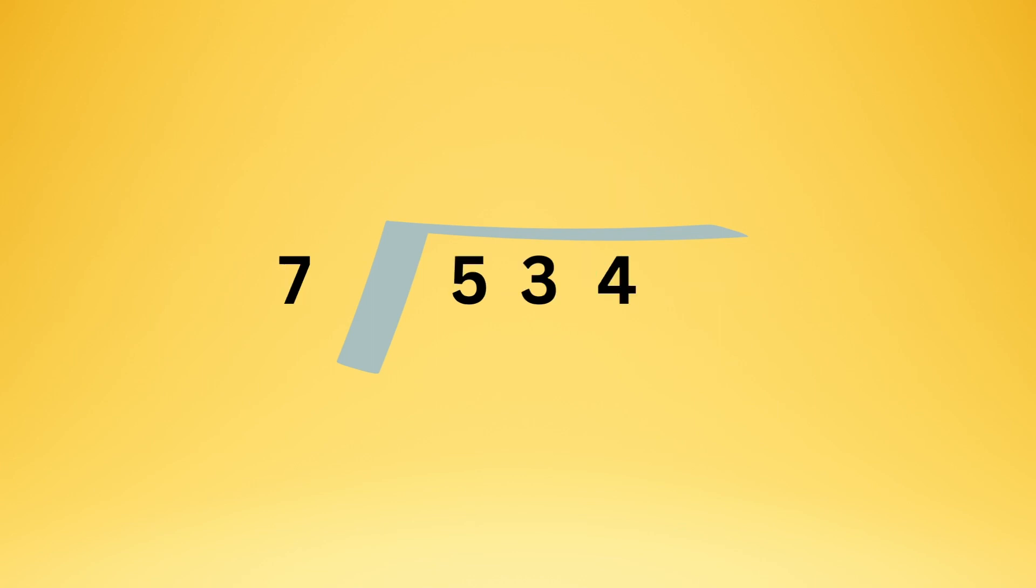Now sometimes it can go on a lot longer. Look at 534 divided by 7. 7 doesn't go into 5, but it does go into 53 seven times with 4 left over. 7 goes into 44 six times with 2 left over.